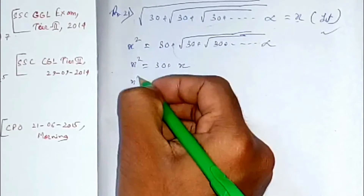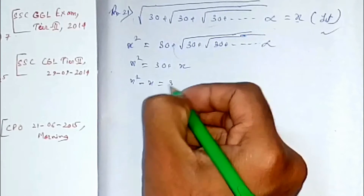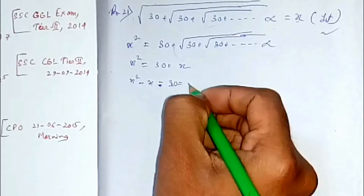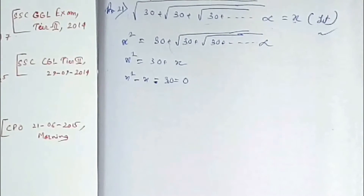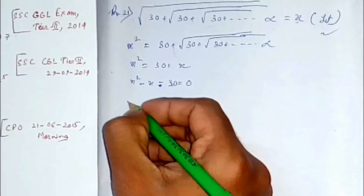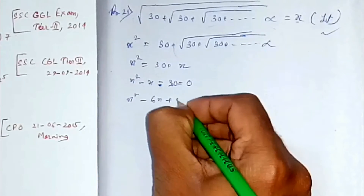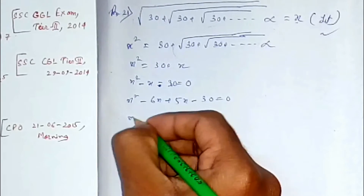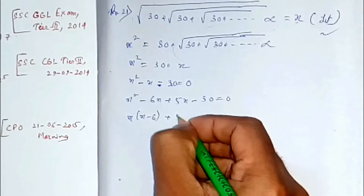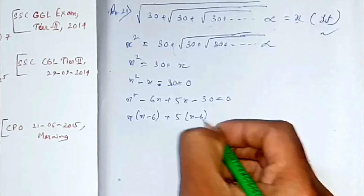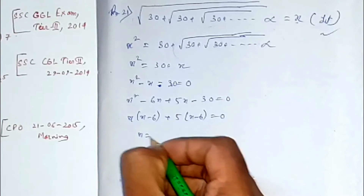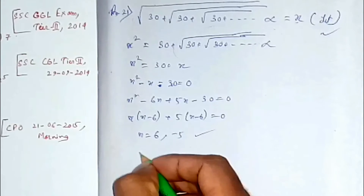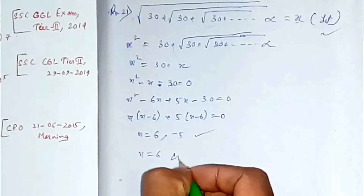It is very simple — you just have to do middle term factorization on x² = 30 + x, which gives x² - x - 30 = 0. By factoring, we get x = 6 or x = -5. We neglect the negative value, so x = 6.